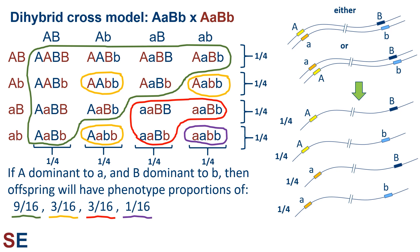Comparing what we see with what we just predicted could allow us to conclude that these loci are on different chromosomes, or far apart on the same one, if the data matches the prediction. If the data doesn't match the prediction, then we have good evidence that these loci are on the same chromosome and too close for free recombination between them.